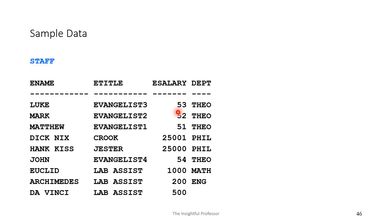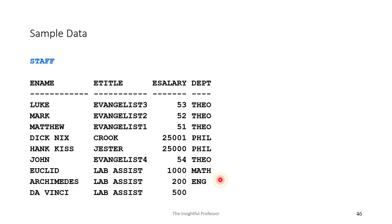The staff table: ENAME is the primary key, and you can confirm that no two employees have the same name. Examining the department column, notice we have Euclid assigned to math and Archimedes assigned to engineering — two departments that do not exist within the department table. But that's not a problem because we don't have referential integrity enforced here. It's just a coincidence that the values look similar, the column name is the same, and the data type description is the same.